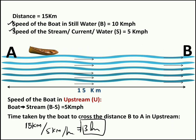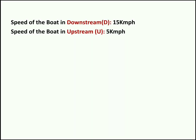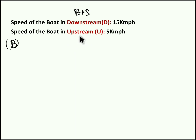Moving to our third and fourth case. Till now we have not faced any challenges, but imagine you are provided with only two data points: speed of boat in downstream and speed of boat in upstream. From this, you have to find speed of boat in still water. Case 1 states speed of boat in downstream equals boat speed plus stream speed, and case 2 states speed of boat in upstream equals boat speed minus stream speed. You can easily find speed of the boat — it is half of downstream plus upstream.